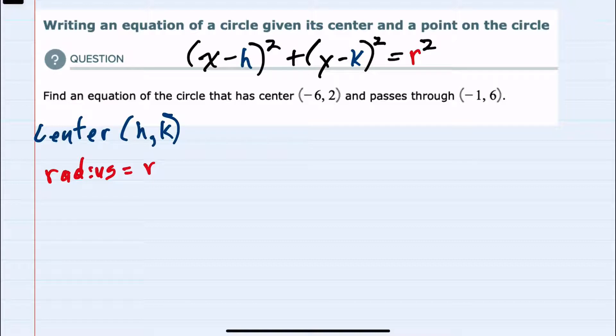And to find the radius we can use the distance formula from the center to the point, because for any circle the distance from the center out to a point on the circle would be the radius.